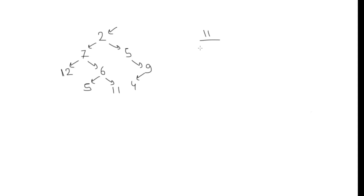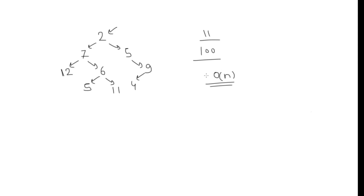If we are finding an element that doesn't exist, say 100, it will keep traversing all elements. Once it has traversed all elements and not found it, it returns false. Overall we are doing this recursively — matching the node, then going left, then right — checking each element, so overall complexity is O(n).